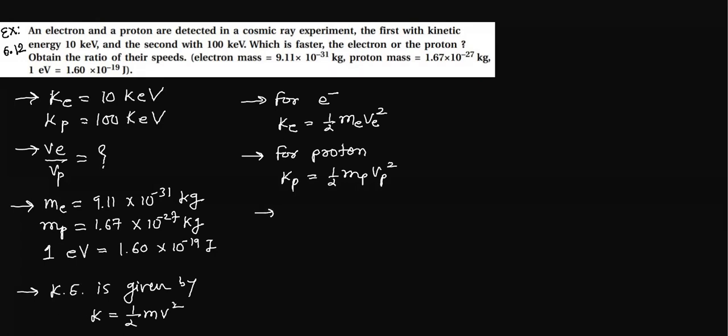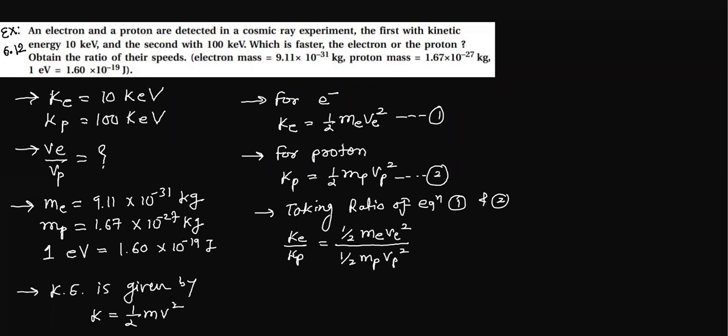So I will take the ratios of equation one and two. Taking ratio of equation one and two: KE upon KP equals one by two ME VE squared divided by one by two MP VP squared. So KE upon KP equals ME VE squared upon MP VP squared.